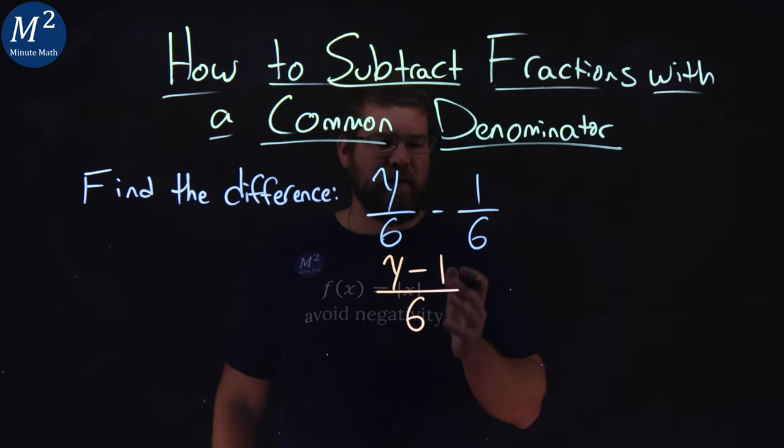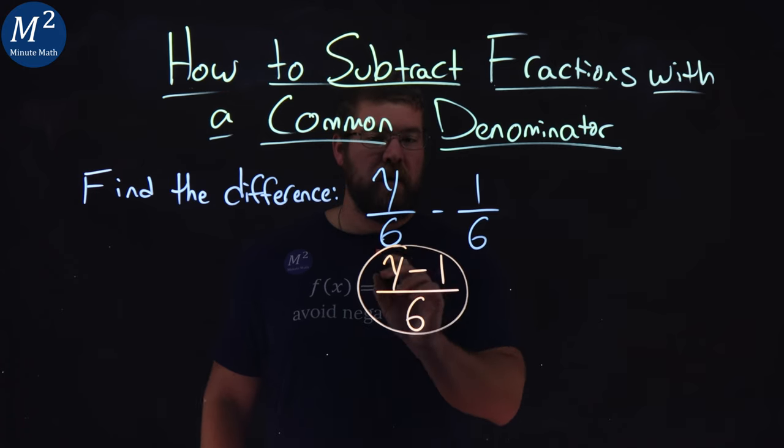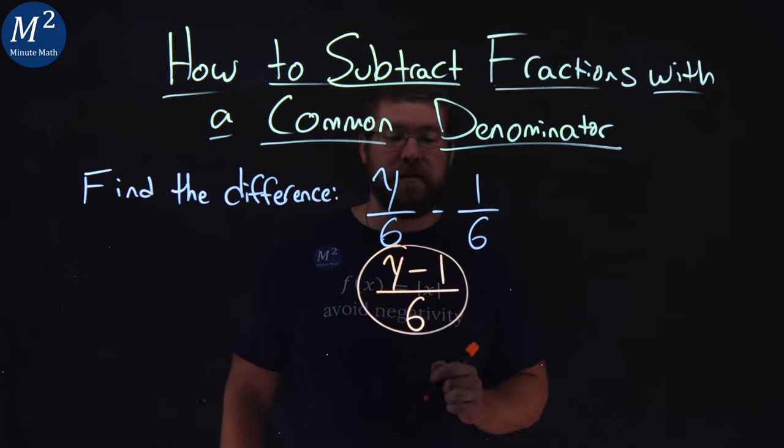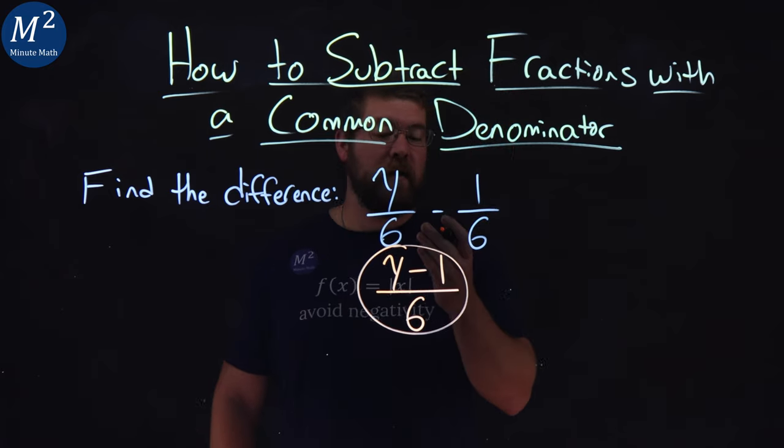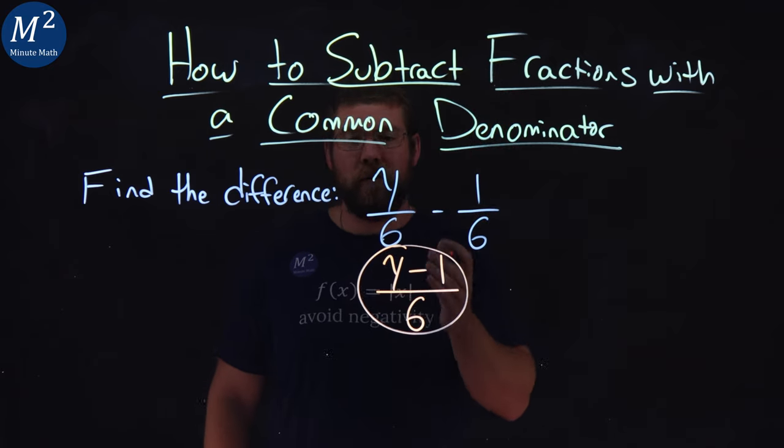and 6, well we can't really simplify within either one of those. And so that's it. y over 6 minus 1 over 6 just simplifies to be y minus 1 over 6.